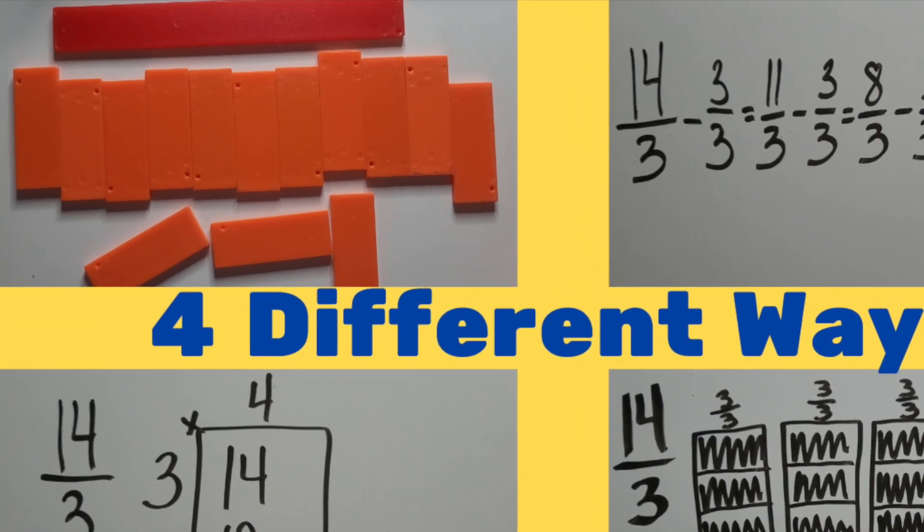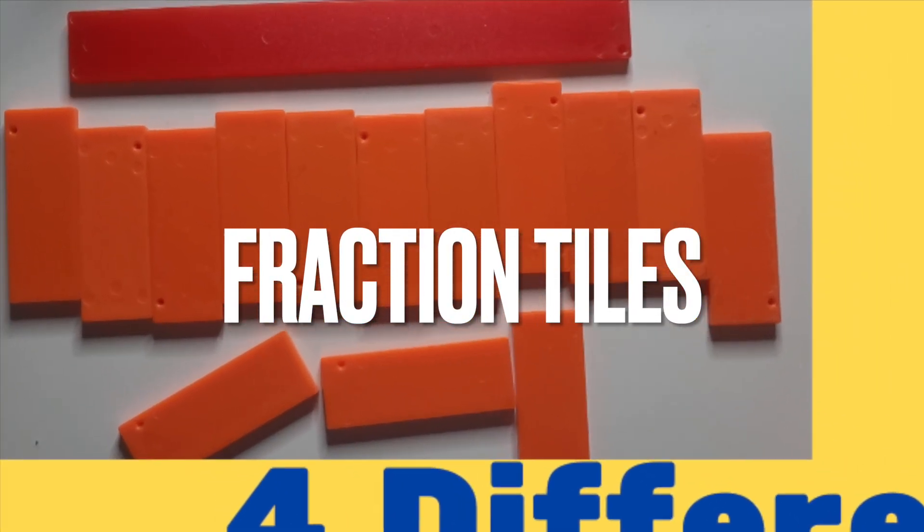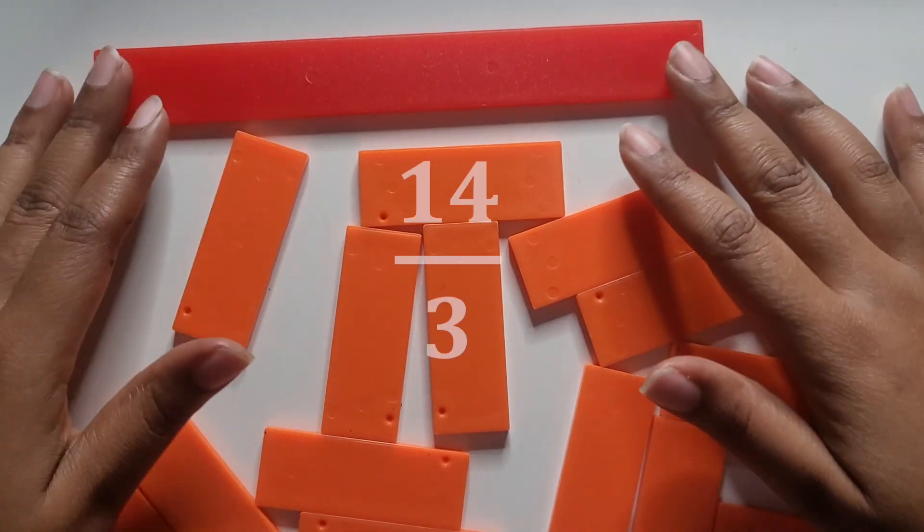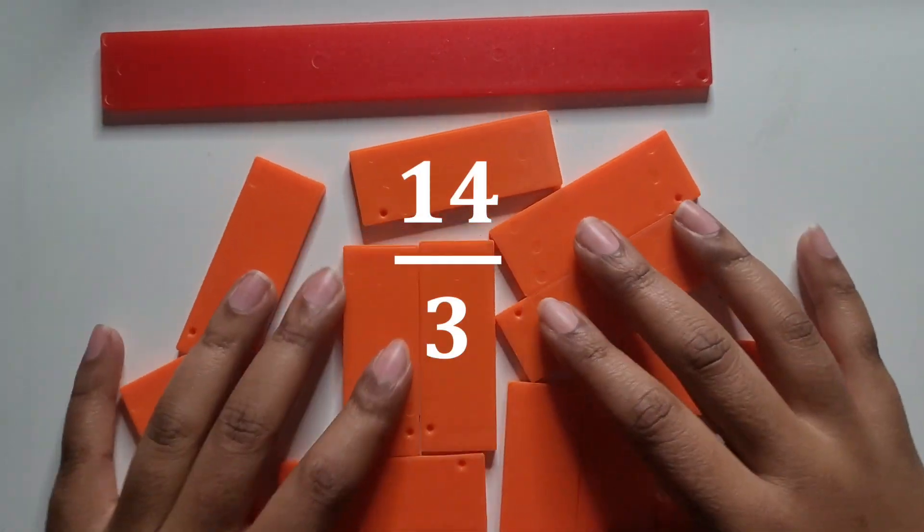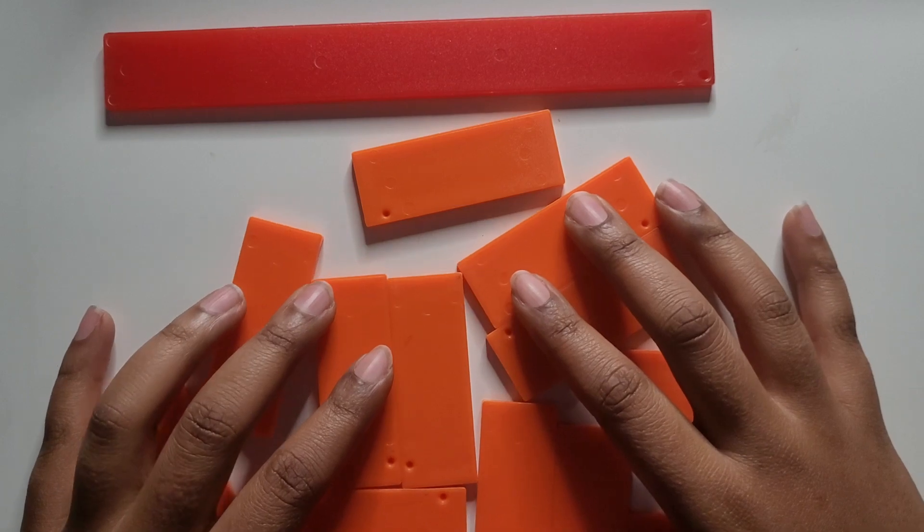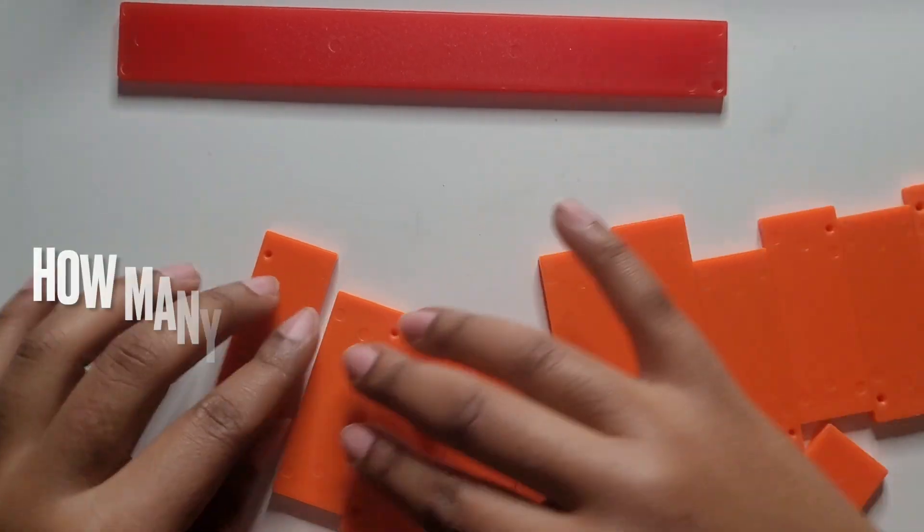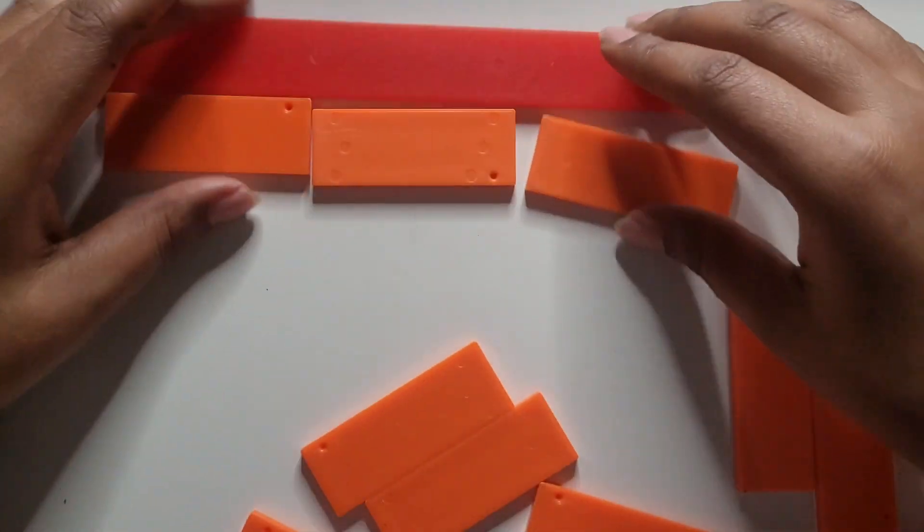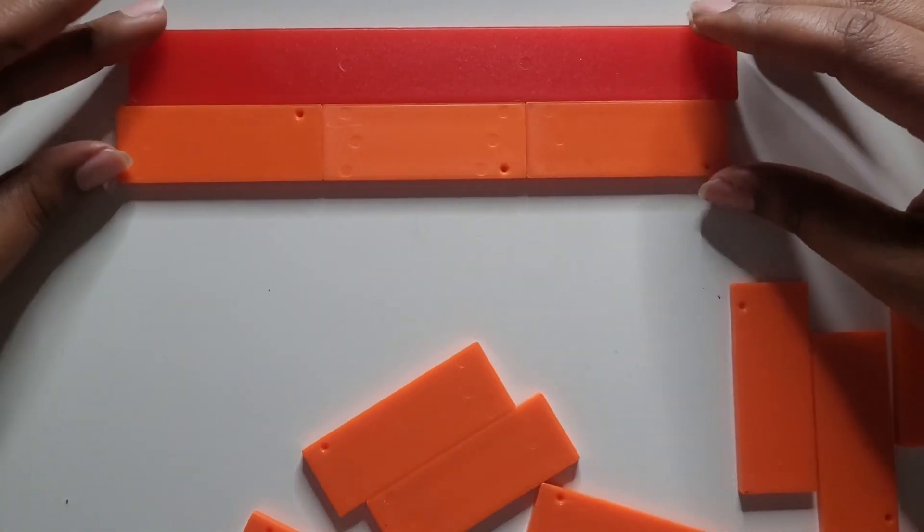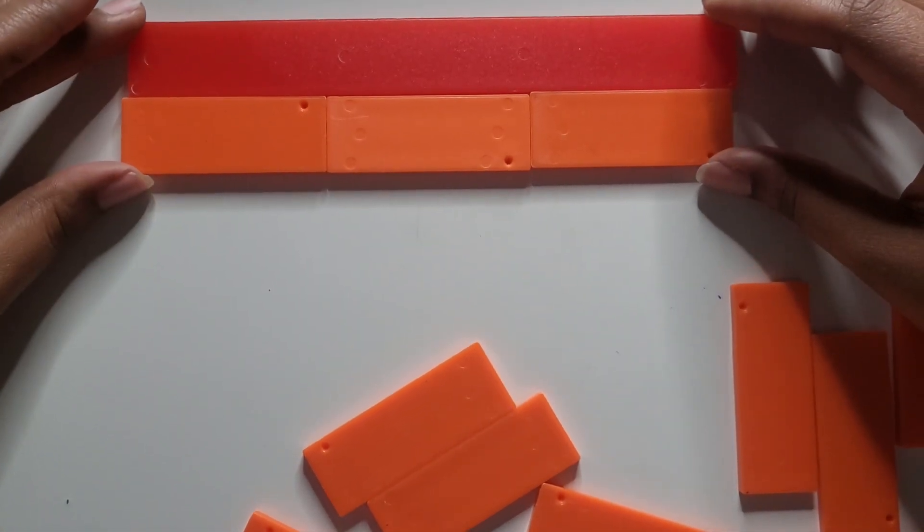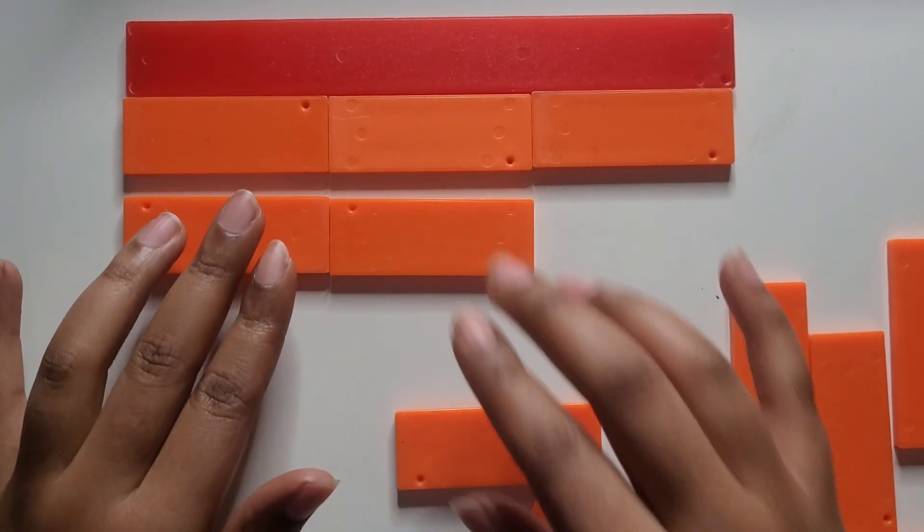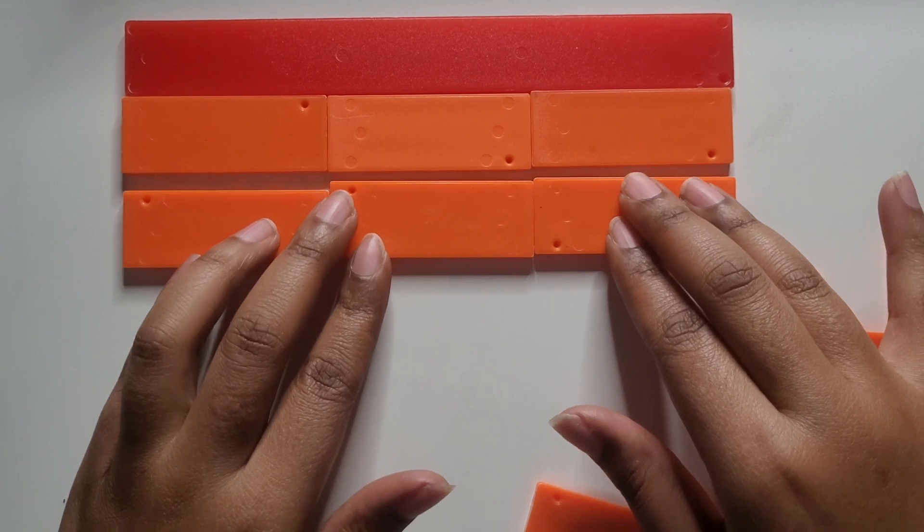With the first way we're going to use math manipulatives, specifically fraction tiles. With our fraction tiles we're going to convert or rename 14 thirds into a mixed number. So let's think about how many thirds is equivalent to one whole. Lining up our thirds against the red tile, which represents one whole, we see that three thirds is equivalent or equal to one whole.